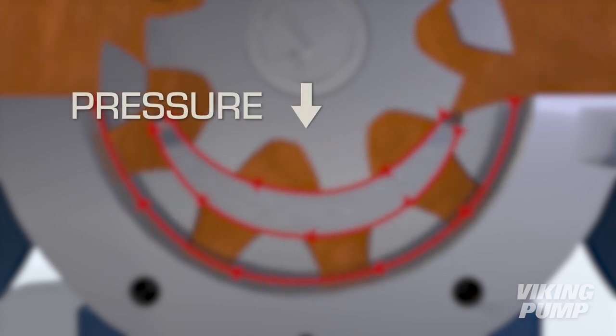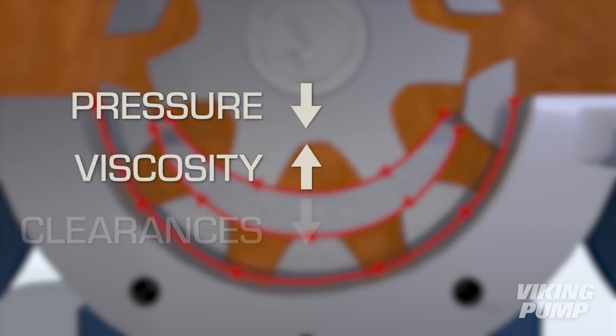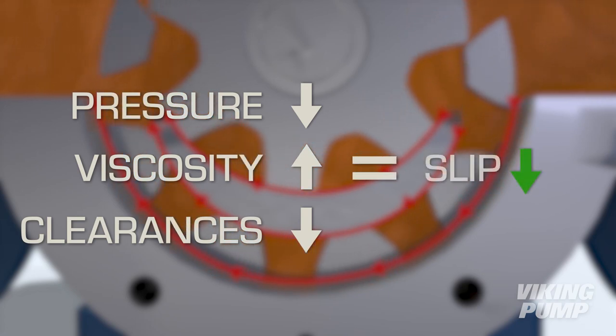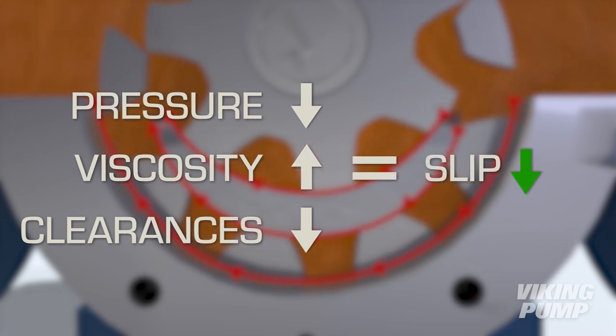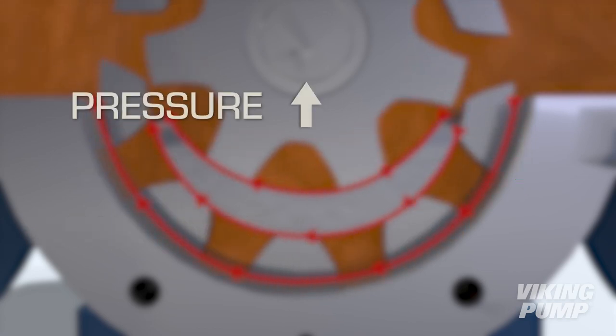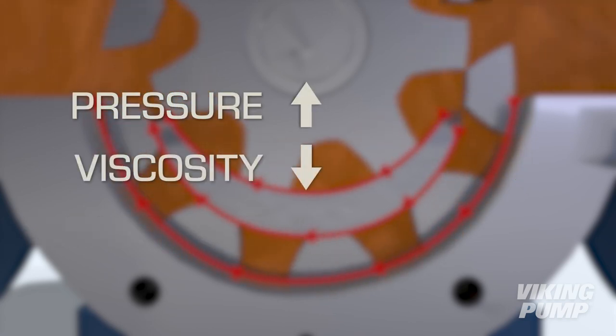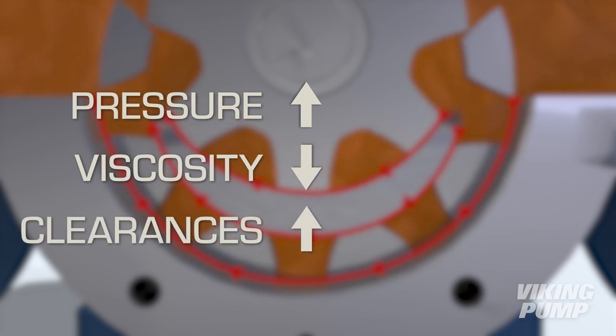If the pressure is low, viscosity is high, and clearances are tight, slip is low, and the actual flow is very close to the theoretical capacity of the pump. Conversely, when pressure is high, viscosity is low, and clearances are wide, the slip is high.